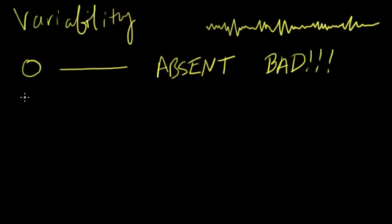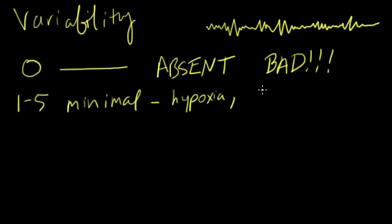You better do something, okay? If the variability—and again, that is just the increase or decrease from the baseline—if the variability is one to five, that's called minimal variability. Minimal variability is caused by hypoxia, a sleeping baby, and it can be caused by narcotics.